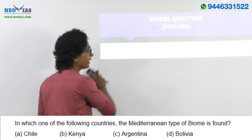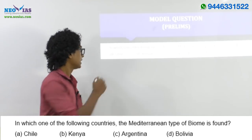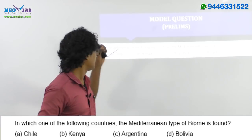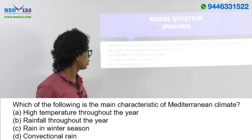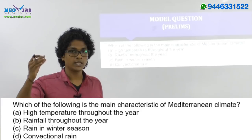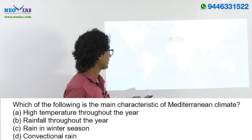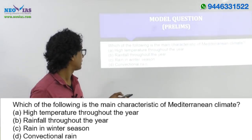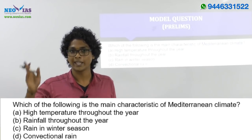Next question: 'In which one of the following countries is the Mediterranean type of biome found? Chile, Kenya, Argentina, and Bolivia.' The answer is Chile. In fact, Chile is the region where this type of climate as well as the biome is predominantly seen, over the central Chile regions. Next question: 'Which of the following is the main characteristic of Mediterranean climate?' The first option, high temperature throughout the year, suggests a region near the equator — that is the property of equatorial climatic type.